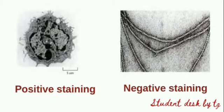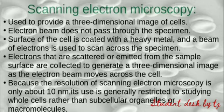This is the key difference between positive and negative staining in transmission electron microscopy. Now, in scanning electron microscopy (SEM) we obtain a 3D image of the cell, whereas in TEM we obtain 2D images. Scanning electron microscopy gives us a three-dimensional image of the cell surface.